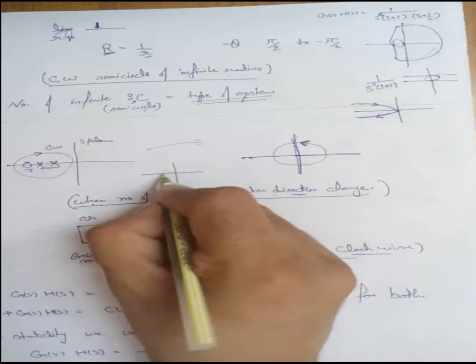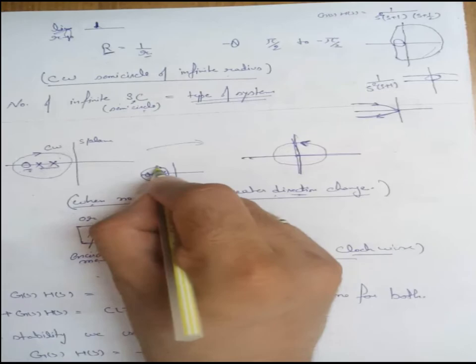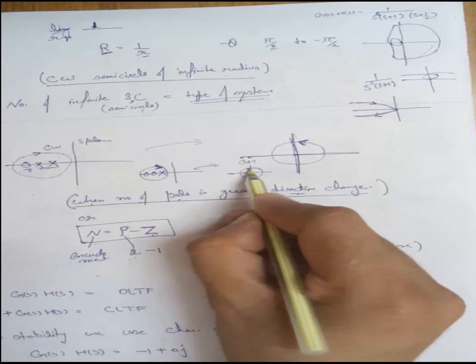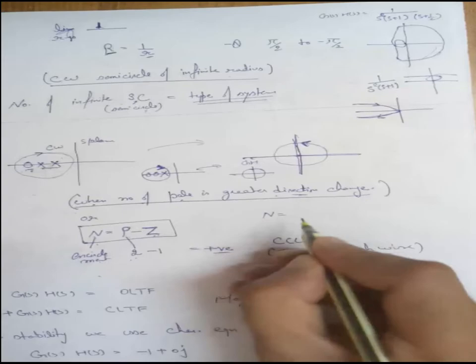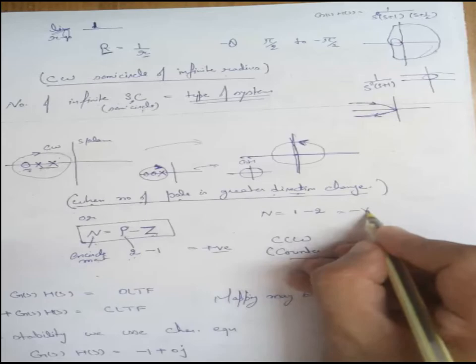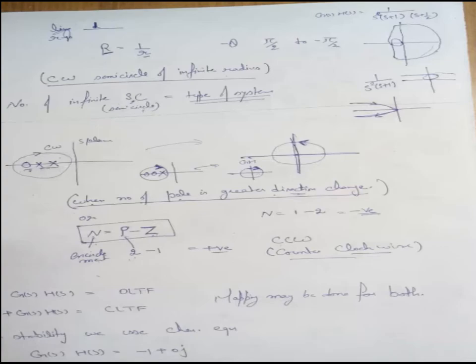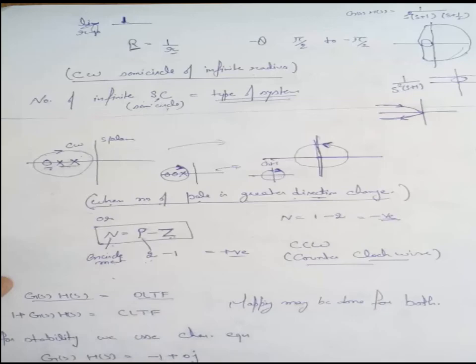We always consider the positive direction as counterclockwise. Now with two zeros in the system, encircling them gives a certain direction. Mapping to the GH plane, we find N equals number of poles (1) minus number of zeros (2), which is negative — negative sign indicates clockwise direction. So the direction does not change in this case, whereas it does change in the previous case.